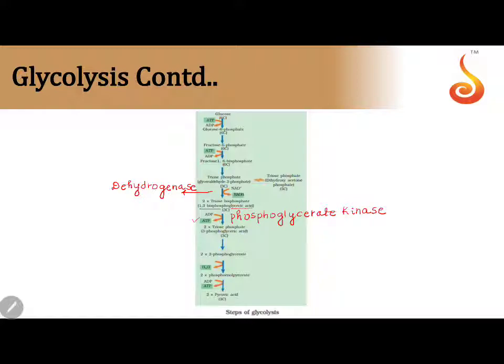3-phosphoglyceric acid is converted to 2-phosphoglycerate. We removed the phosphate from the third carbon and shifted it to the second carbon. We use the word mutase if you change the position of something, so here the enzyme is mutase.